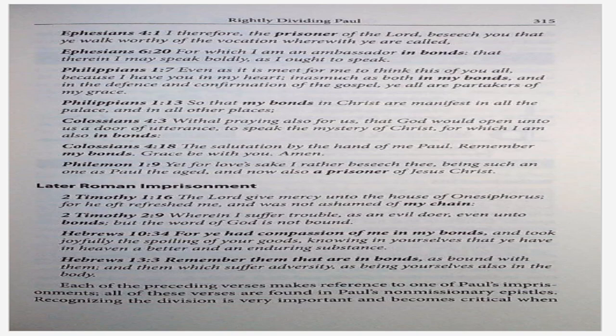Later Roman imprisonment — 2 Timothy 1:16: The Lord give mercy on the house of Onesiphorus, for he oft refreshed me and was not ashamed of my chain. 2 Timothy 2:9: Wherein I suffer trouble as an evildoer, even unto bonds, but the word of God is not bound. Hebrews 10:34: For ye had compassion of me and my bonds, and took joyfully the spoiling of your goods, knowing in yourselves that ye have in heaven a better and enduring substance. Hebrews 13:3: Remember them that are in bonds as bound with them, and them which suffer adversity as being yourselves also in the body. Each of the preceding verses makes reference to one of Paul's imprisonments. All of these verses are found in Paul's non-missionary epistles.